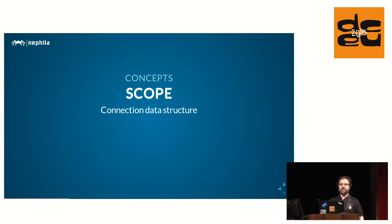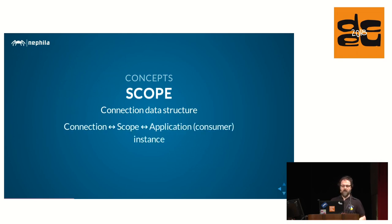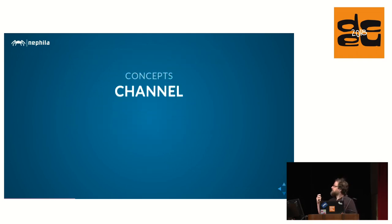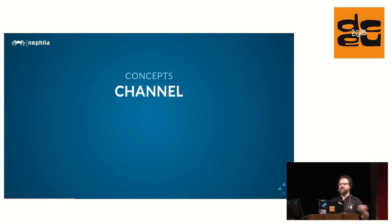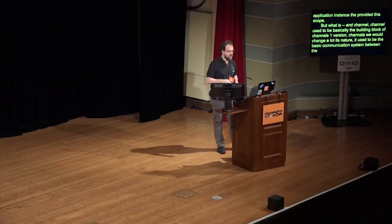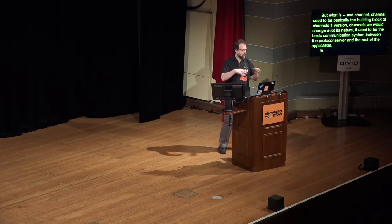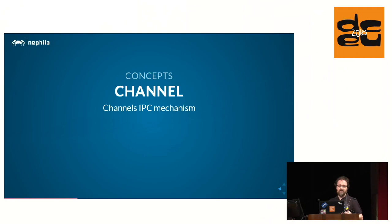Scope is also one of the big changes in channels 2. Every time a connection is established, a scope is created, and all the information regarding the connection that the protocol server wants to deliver to you is put into the scope. The channel layer changed a lot in version 2 - it used to be the basic communication system between the protocol server and the rest of the application. In channels 2, it is basically an IPC mechanism for consumers to speak to each other, and it's where events happen.